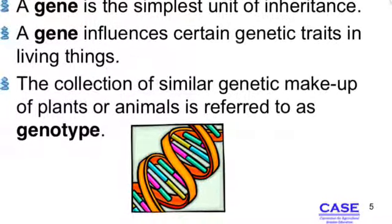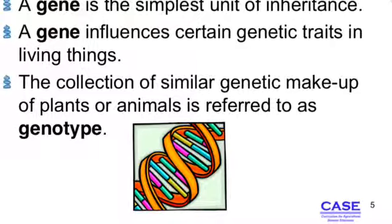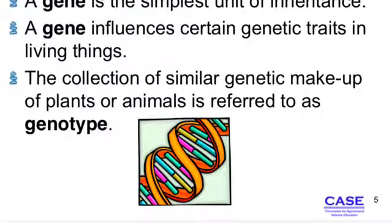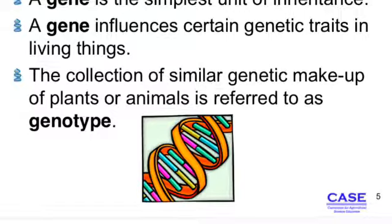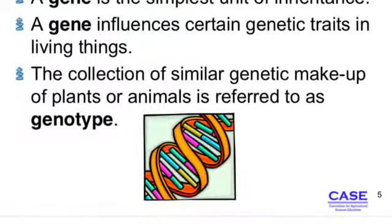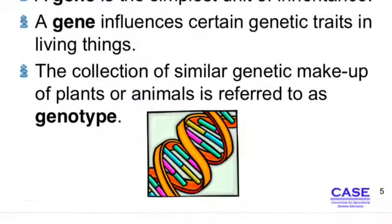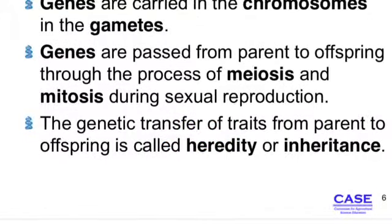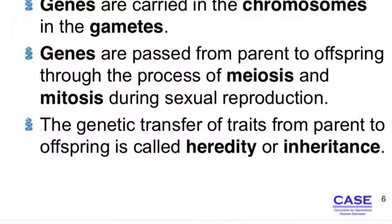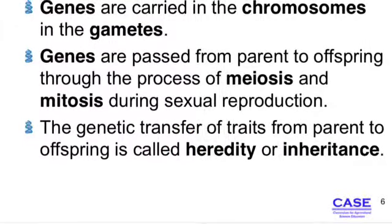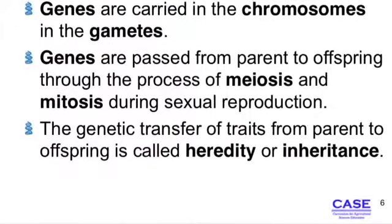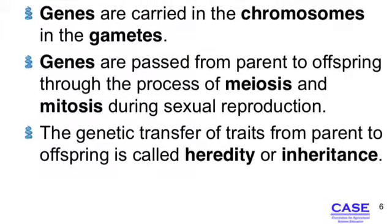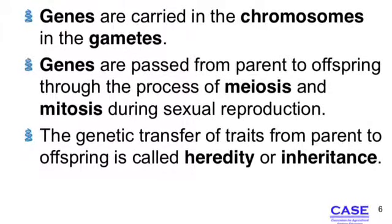A genotype is actually what the genes look like. Genes are carried in the chromosomes of gametes, and gametes are the sex cells. Genes are passed from parent to offspring through the process of meiosis and mitosis during sexual reproduction. The genetic transfer of traits from parents to offspring is called heredity or inheritance.